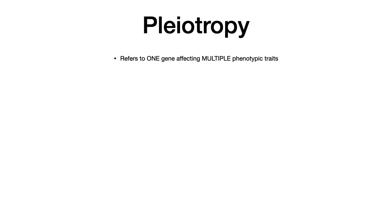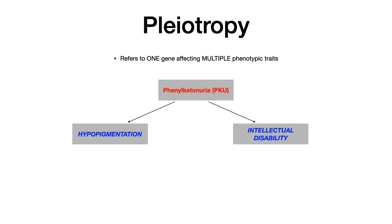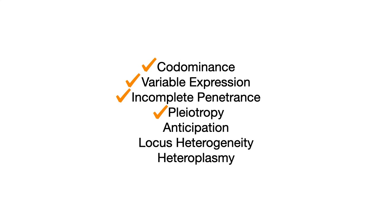Pleiotropy refers to one gene affecting multiple phenotypic traits. A really beautiful example is PKU — phenylketonuria. PKU is one diseased allele that gives rise to multiple phenotypic traits, including hypopigmentation, intellectual disability, and others. Any disease with more than one phenotypic derivative is pleiotropic. Essentially, any disease with multiple symptoms is pleiotropic.